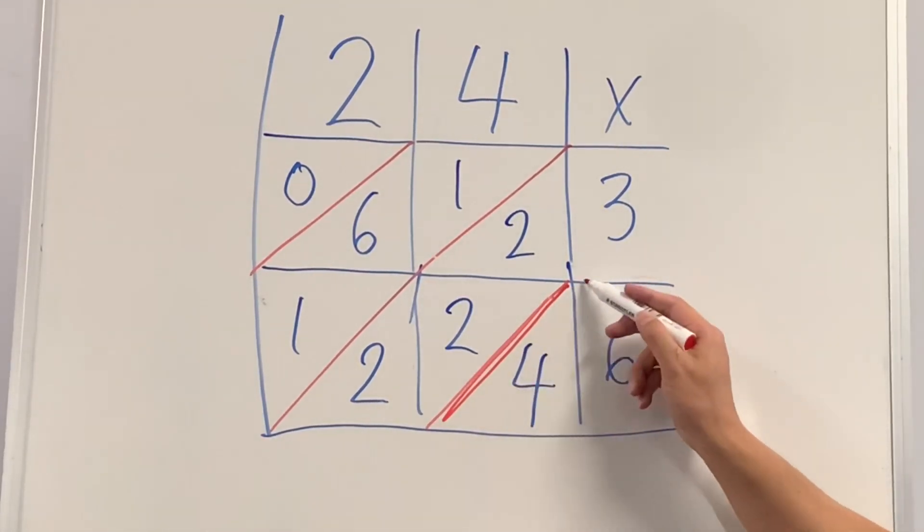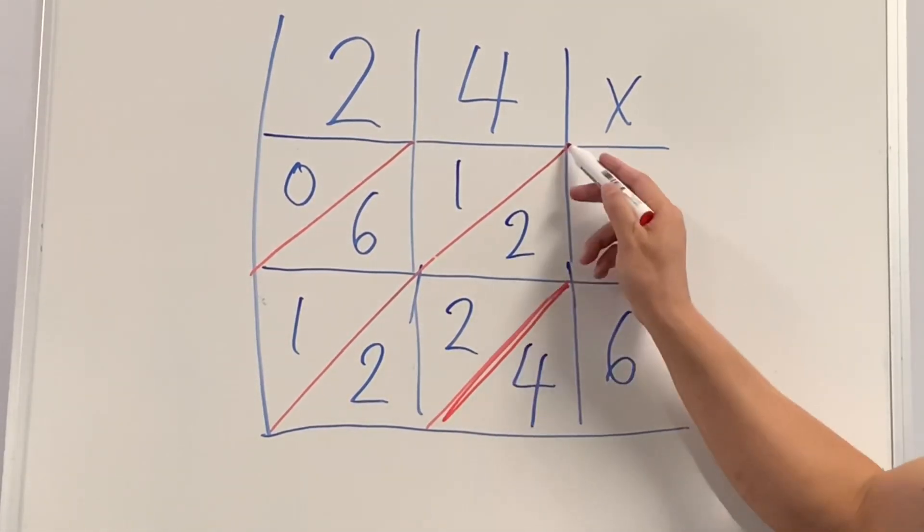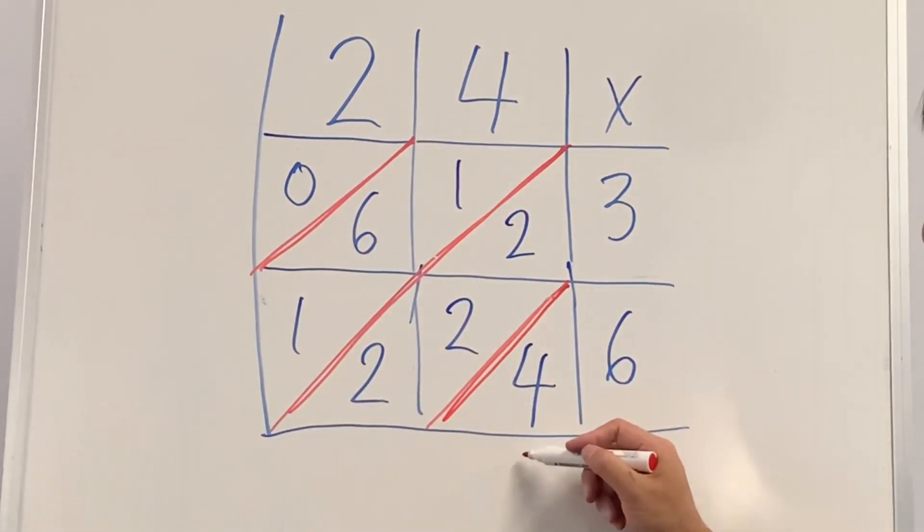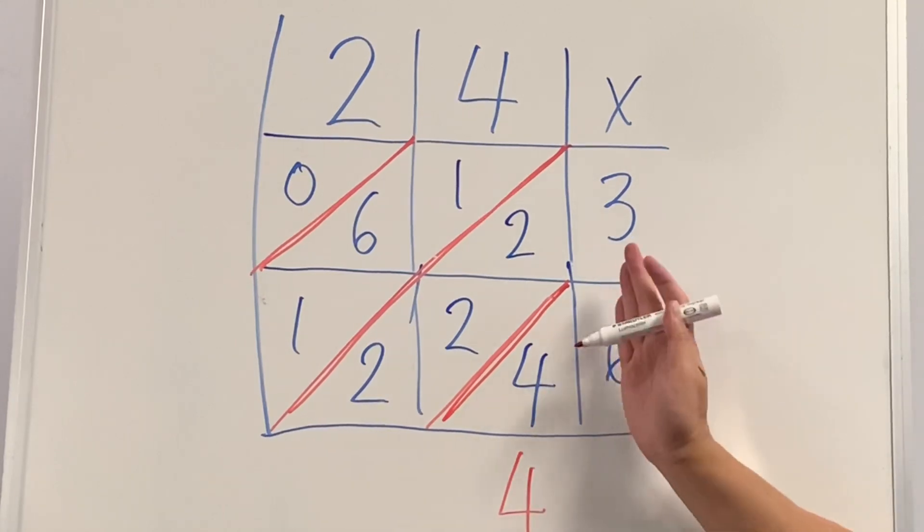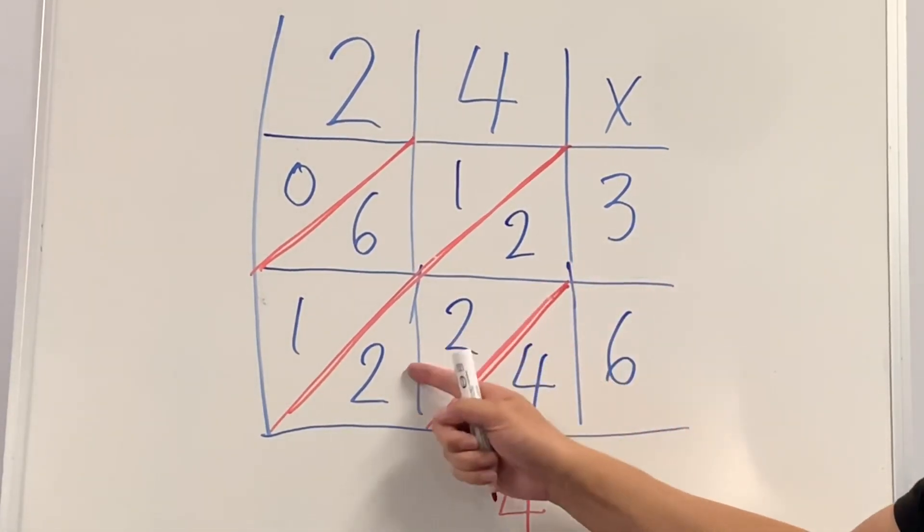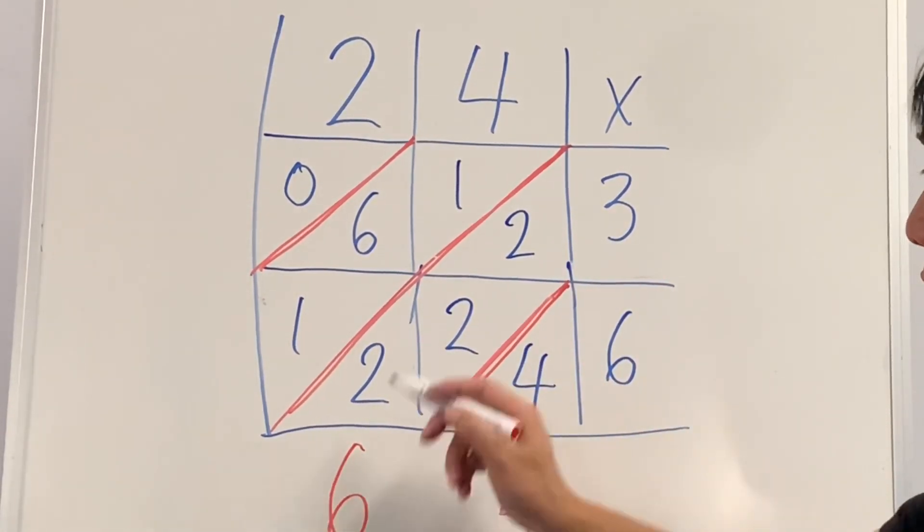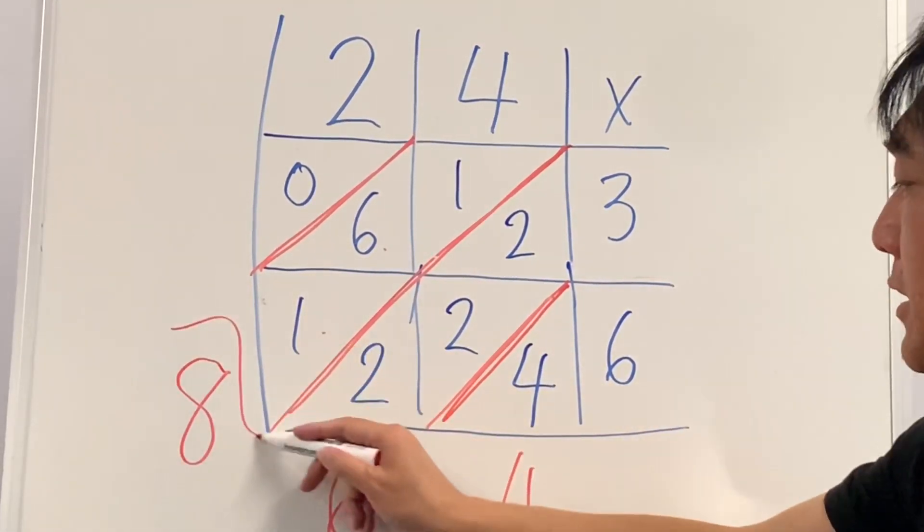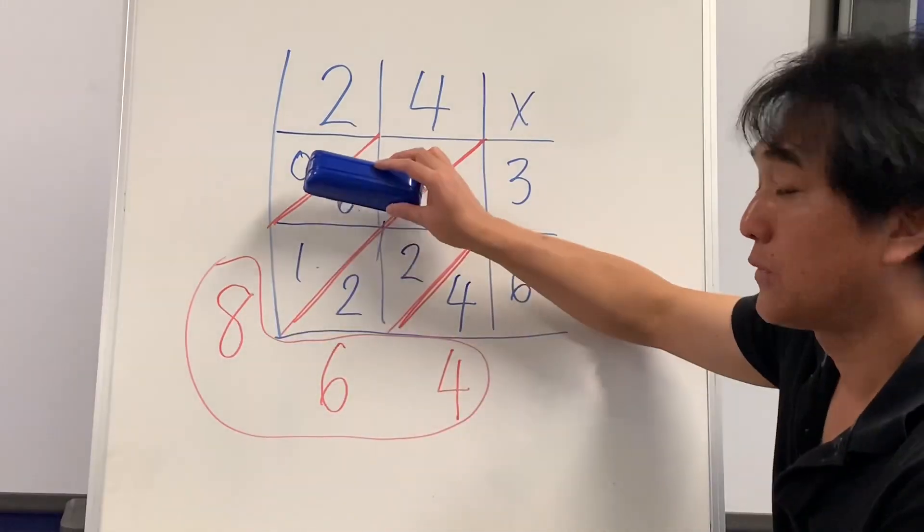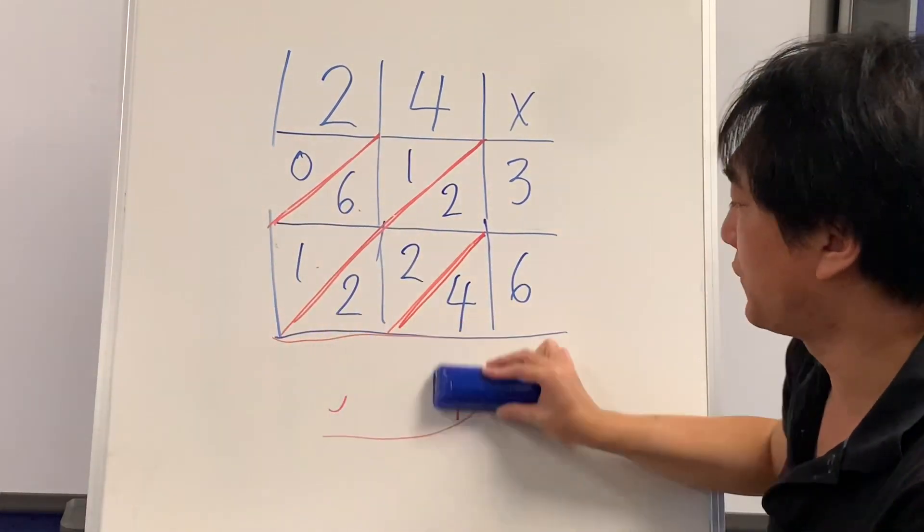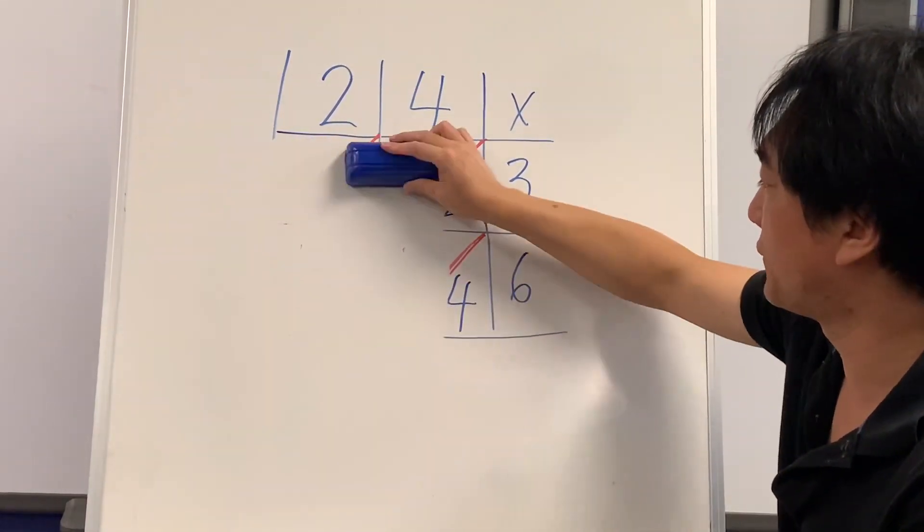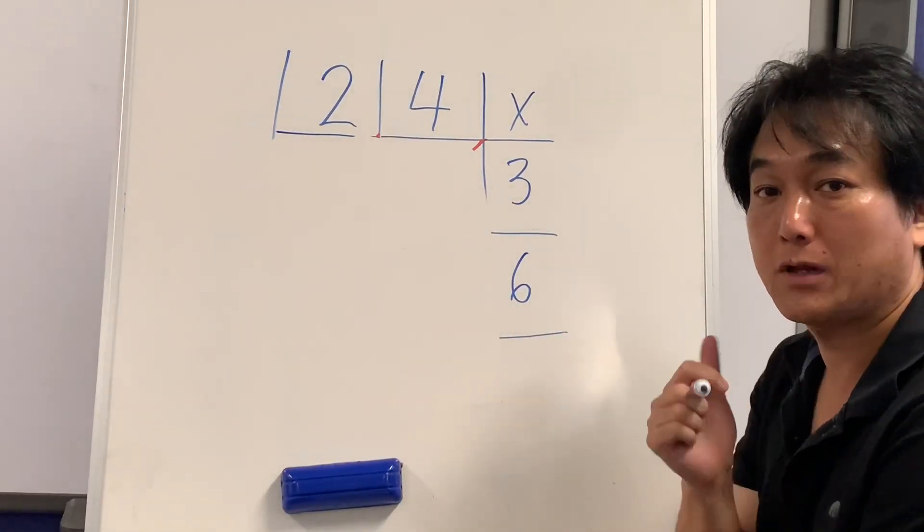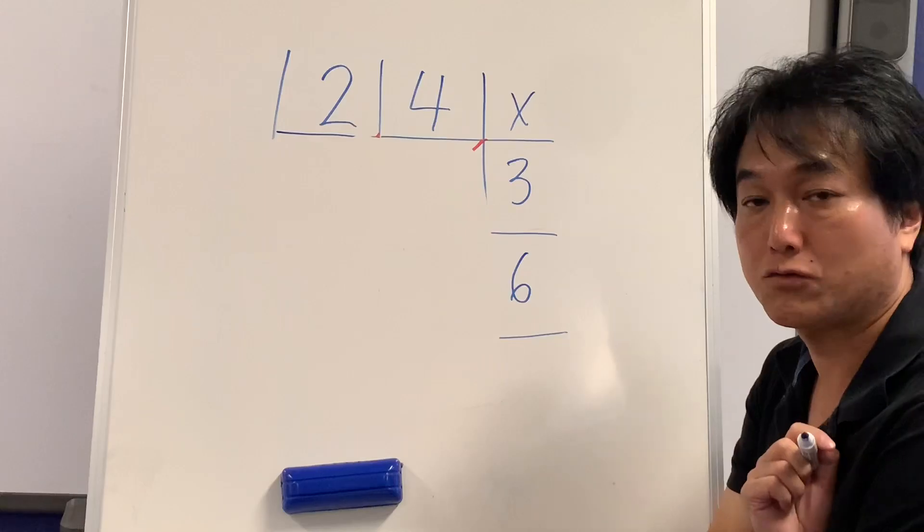We're going to add the number underneath these diagonal lines or between diagonal lines. 4 because it's only 4 there. 2 plus 2 plus 2 is 6. 1 plus 6 plus 1 is 8. Answer is 864. Would you like to give it a shot? Let's try by yourself 24 times 36.